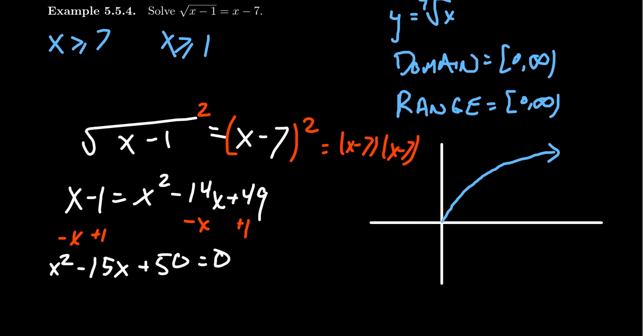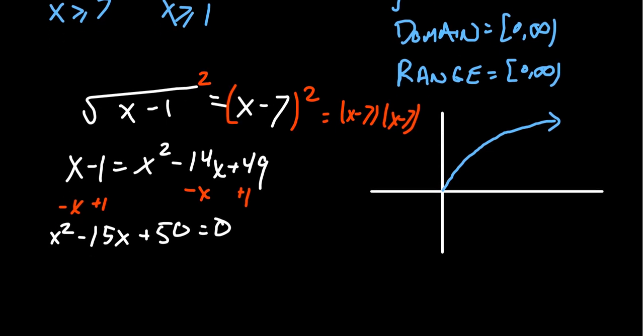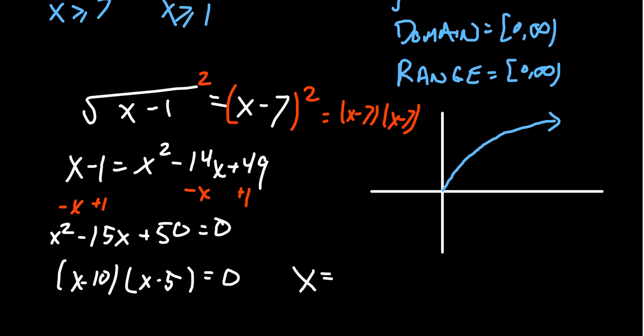We can solve by the quadratic formula or by factoring. Factors of 50 that add to 15 are 10 and 5, both negative: so we get x minus 10 times x minus 5 equals zero. That gives us x equals 10 or x equals 5 as our two solutions.